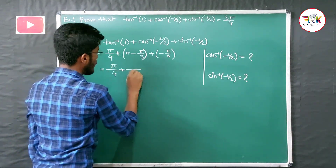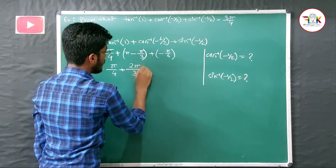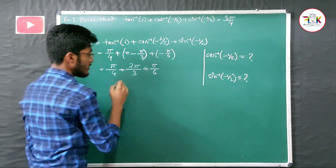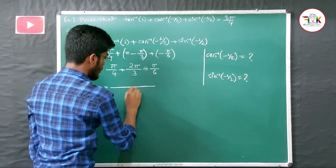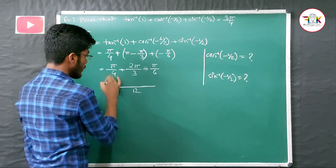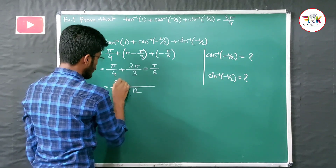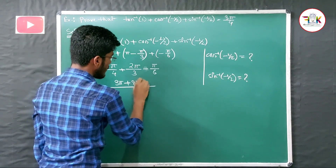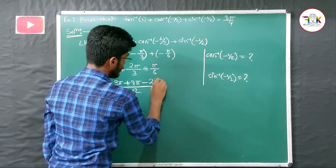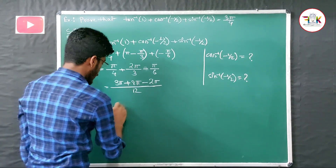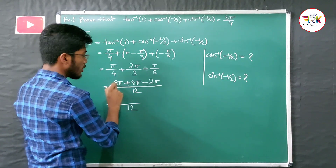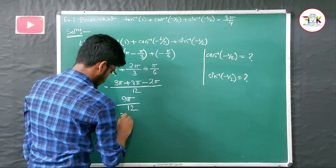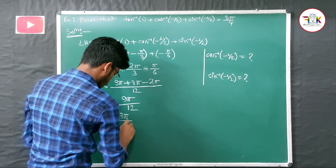So we have π/4 + (π - π/3) + (-π/6). Taking LCM as 12: we get (3π + 12π - 4π - 2π)/12 = 9π/12, which simplifies to 3π/4. This equals the RHS.